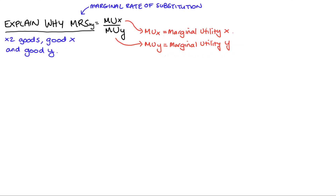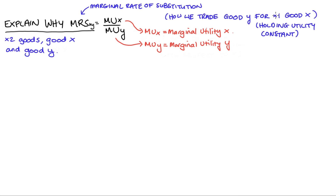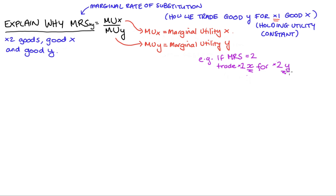Just to be clear on the interpretation, I have here MRS subscript xy. The marginal utility of x is on the numerator and the marginal utility of y is on the denominator. This tells us about the rate at which we are trading good y for exactly one unit of good x, holding utility constant. So if our MRS came up as two, this tells us that we would trade one unit of good x for two units of good y — or, to say it another way, we value one unit of good x equal to two y.